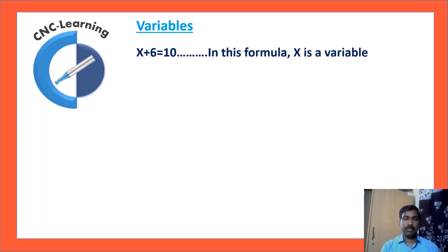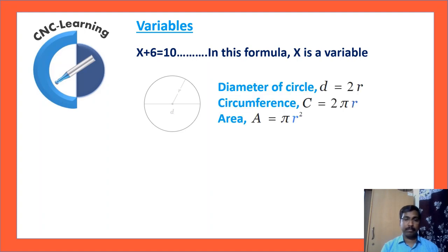Variables. Let us see this formula: x plus 6 equals 10. In this, x is a variable. Now in this sketch you can see a circle, and radius and diameter are mentioned. If you look at the formulas for a circle: diameter D equals 2R, circumference C equals 2 pi R, area A equals pi R squared. So in all these cases, you can see R is a variable.